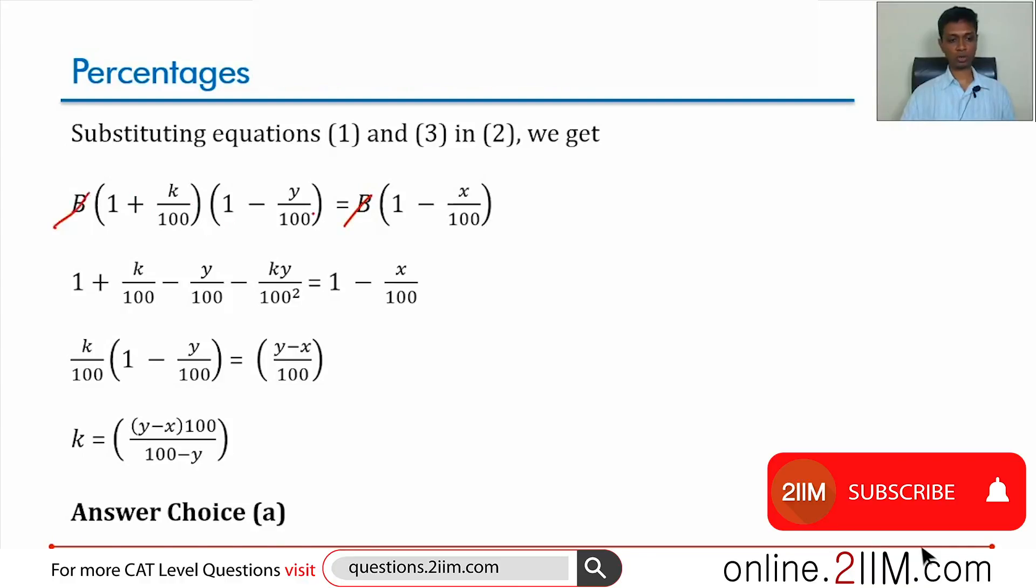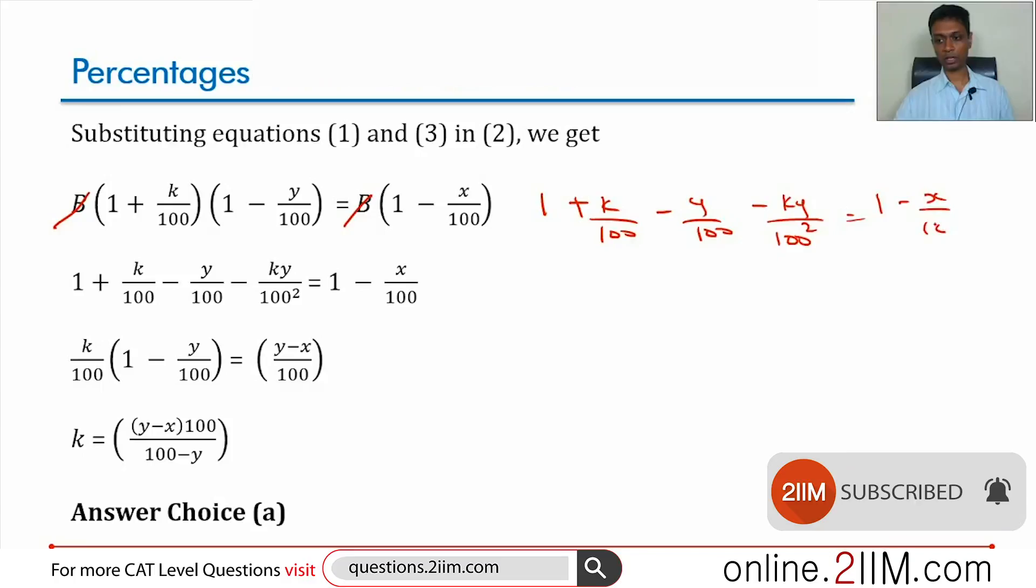We get 1 plus k by 100 minus y by 100 minus ky by 100 square equals 1 minus x by 100.